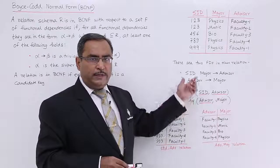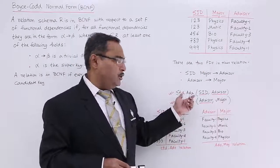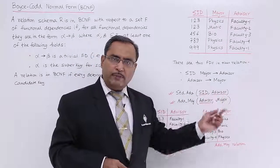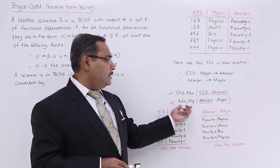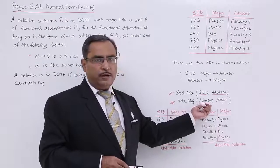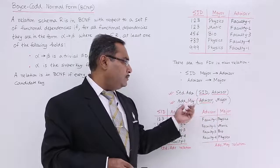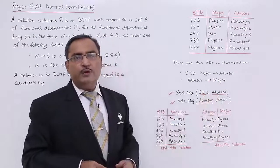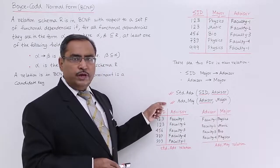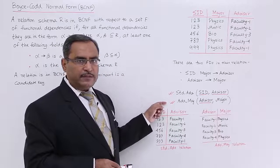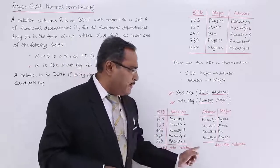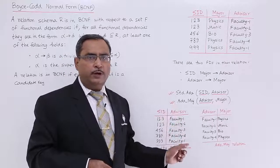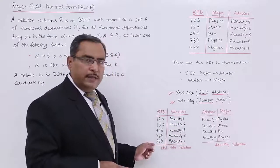Now we are going to split this relation into 2 relations. One is student-advisor, containing student ID and advisor, where both become prime attributes. The other is advisor-major, where advisor is the prime attribute and major is derived from it. We form advisor-major from the functional dependency advisor determines major, and student-advisor from the other functional dependency. These are the two relations formed after splitting the original one, with their respective tuple details. Now you can perform insertion, deletion, and updation as required — all anomalies have been resolved.